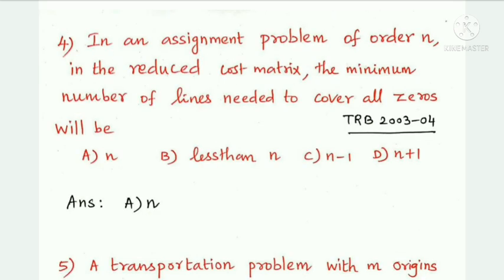Next question: in an assignment problem of order N, in the reduced cost matrix, the minimum number of lines needed to cover all zeros will be equal to N. In the reduced cost matrix, the number of lines equals the number of rows, which equals the number of columns, which equals N.